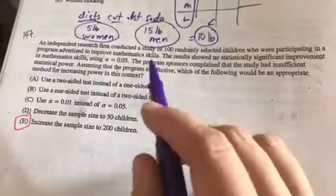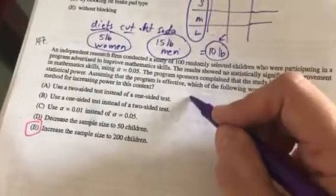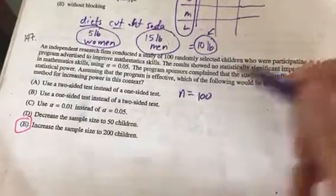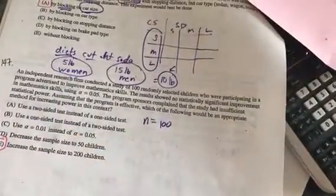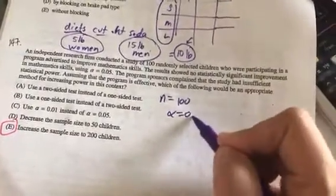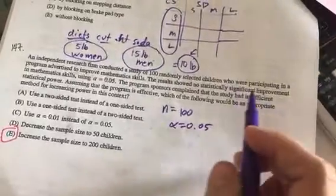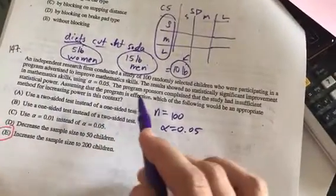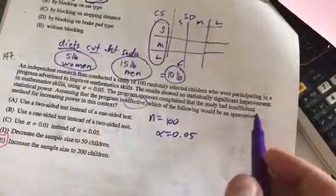This is an independent research firm that conducted a study of 100 children participating in an advertising program to improve math skills. Alpha was 0.05. Now I'm going to scoot to the end because it says assuming it's effective, what would increase power?